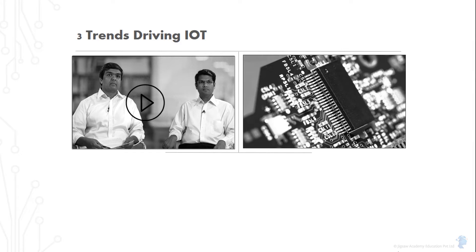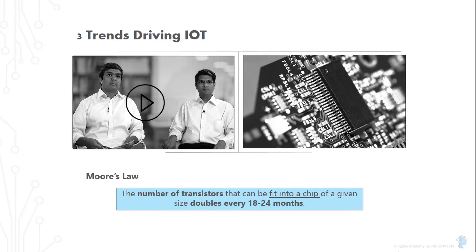Moore's Law posits that the number of transistors that can be packed into a chip of a given size, and hence roughly its computing power, will double roughly every 18 to 24 months. It is not a law in the sense of a physical law, rather, a prediction about the semiconductor industry's rate of innovation.